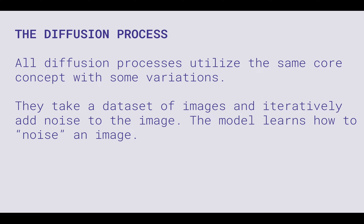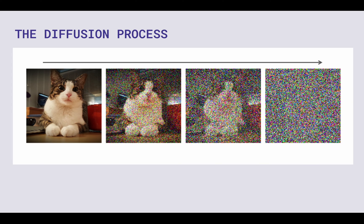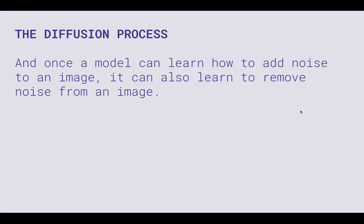They take a dataset of images and add noise to the image. You might ask yourself why add noise — that doesn't make sense. Basically, by adding noise to an image the model learns how to noise an image. That might sound simplistic, but it's important to this process. Let's say we've got a photo of a cat. We want to train the model to add noise in a slow, iterative way. In this step you can still see some of the cat; in this one if you knew it was a cat you might still see it; and at this step it's completely random color noise. Once we train a model how to do that in one direction, we can also learn to remove noise from an image.